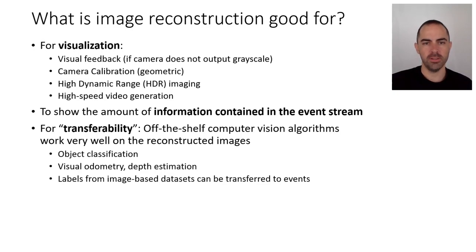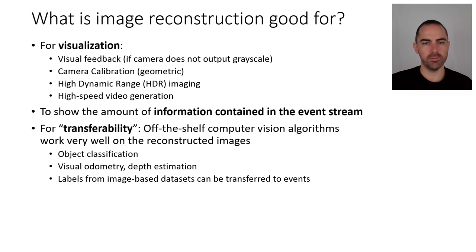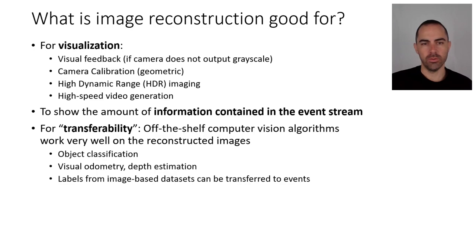Another benefit is transferability: image reconstruction lets you use off-the-shelf computer vision algorithms on the reconstructed images, and it typically works well. The group in Zurich — Henri and colleagues — showed you can use reconstructed images for object classification and visual odometry. Furthermore, if you have correspondence between images and events, you can label those images relatively easily and transfer those labels for training or supervised learning on events, which is something researchers are actively working on.